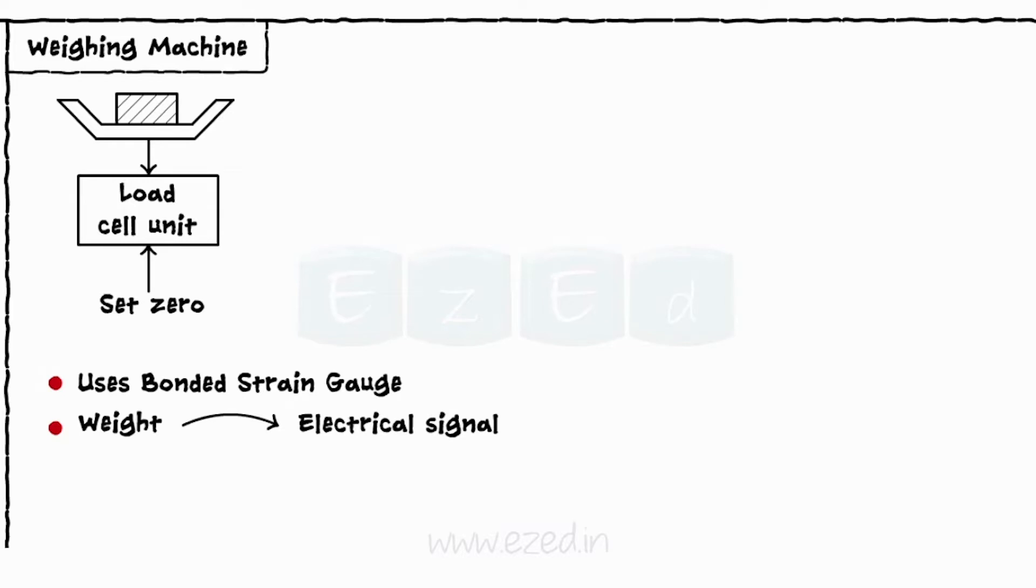Electrical output of load cell unit is amplified by an amplifier and is converted into a digital signal by A to D converter.